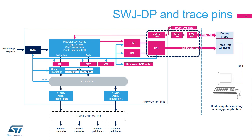The SWJDP enables an external debug probe to access any memory mapped resources also accessible from the Cortex-M33 core. The AHBAP is an AHB master that communicates with the processor core through the debug AHB slave port present in the Cortex-M33. Thus the processor core and therefore the security attribution unit intercept the requests initiated by the SWJDP.